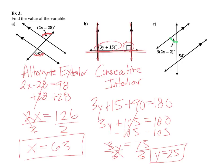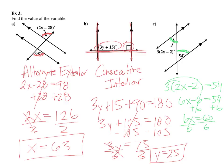The last problem has alternate interior angles: 3 times (2x minus 2) equals 54. Distribute to get 6x minus 6 equals 54, add 6 to get 6x equals 60, divide by 6, and x equals 10. To summarize: alternate interior, alternate exterior, and corresponding angles are equal to each other. Consecutive interior angles are supplementary, and if there's no name for a pair, they're supplementary as well.